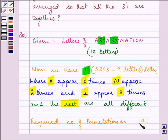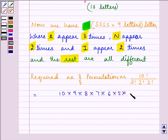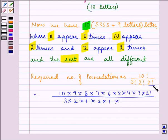10 factorial divided by 3 factorial, 2 factorial, 2 factorial. Now here 10 factorial can be written as 10 multiplied by 9 multiplied by 8 and so on. 3 factorial can be written as 3 into 2 into 1. 2 factorial can be written as 2 into 1, and 2 factorial can be written as 2 into 1.